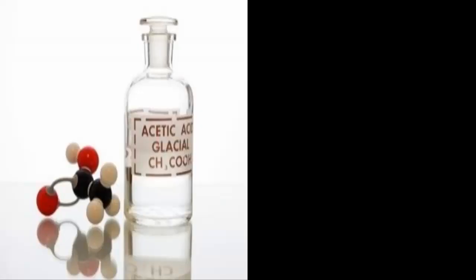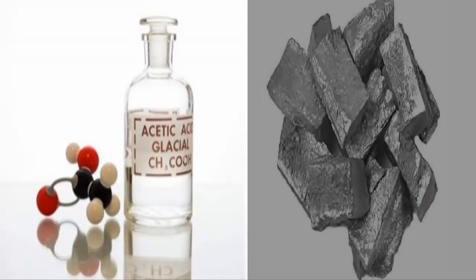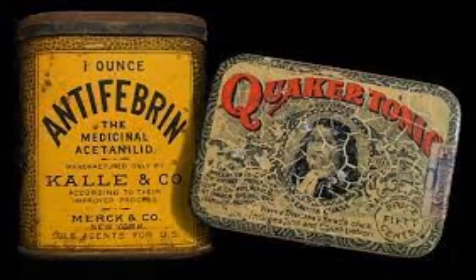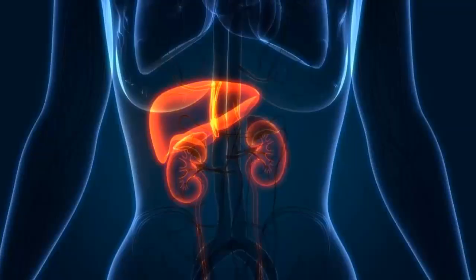In this video we will obtain acetanilide from acetic acid and zinc. Acetanilide was discovered at the end of the 19th century and was used as a painkiller known as antifibrin in year 1948.